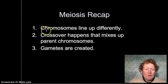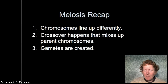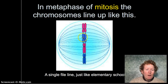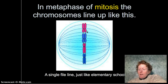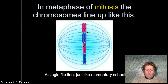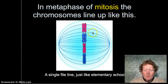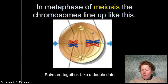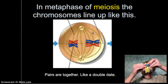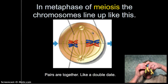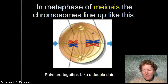To recap: in meiosis, chromosomes line up differently, crossover happens mixing up the parent chromosomes, and gametes are created. In metaphase of mitosis, the chromosomes line up single file — just like elementary school — and get pulled apart at the centromere. In metaphase of meiosis, the homologous chromosomes line up together and exchange their information — it's more like a double date, because you have two pairs in metaphase one of meiosis. That's an important difference.